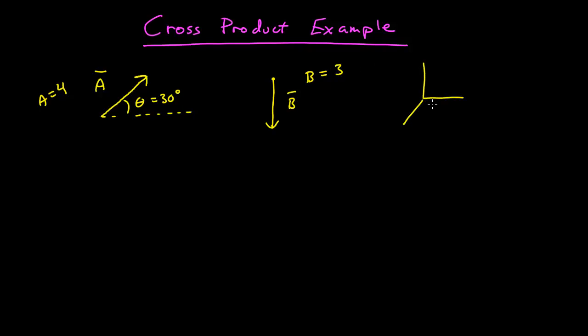I have a right-handed coordinate system: X to the right, Y up, and Z is then out of the screen. So I want to know what is then A cross B.